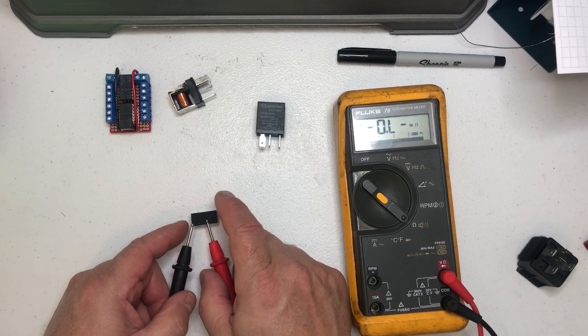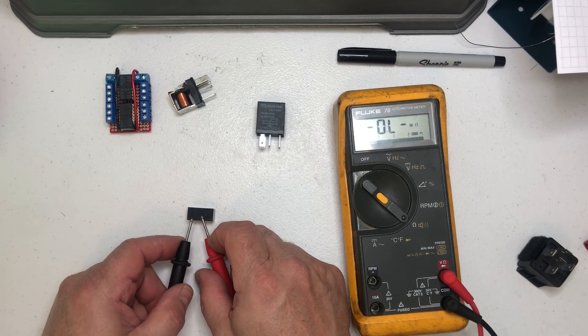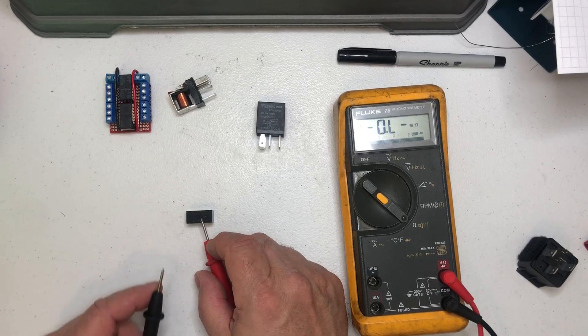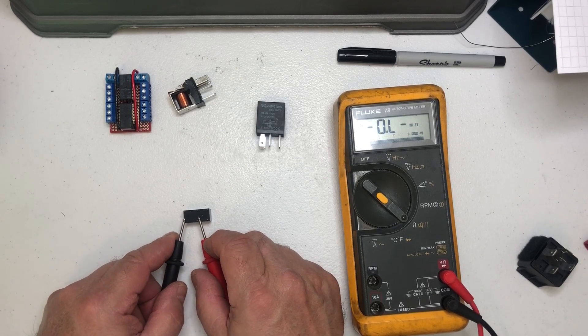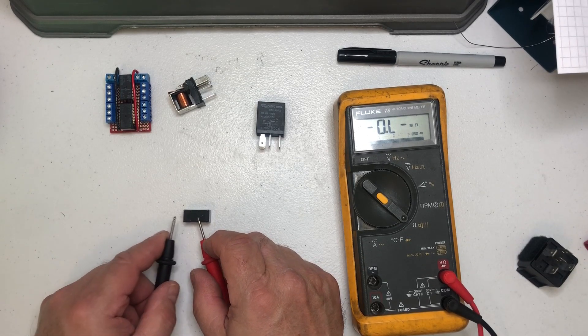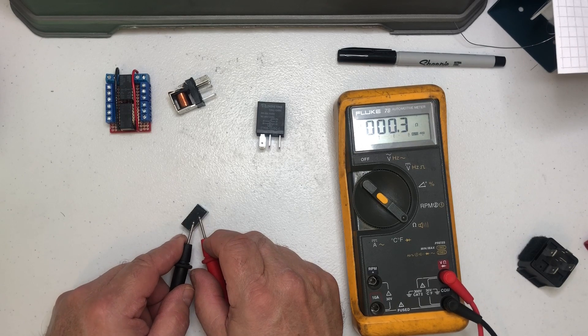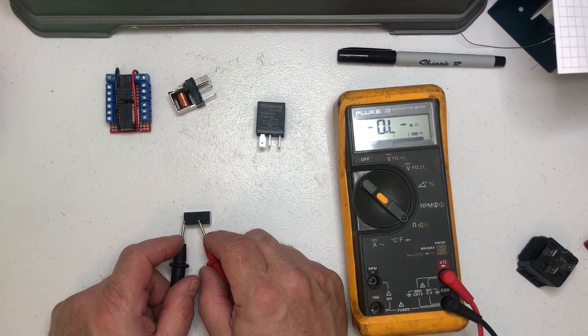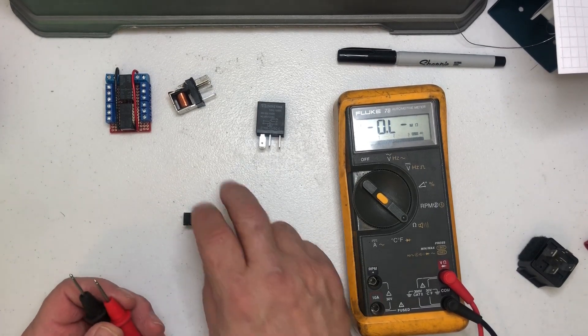And then according to the diagram, this one here should be the common. So you can see that's open and that one's closed. And when we change this state then these two would be closed. And if you want to make sure, just do like we did with the other one.